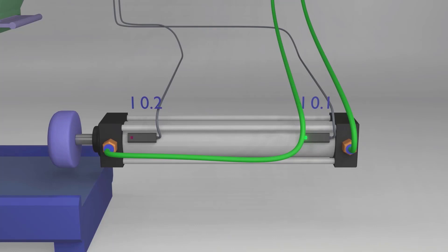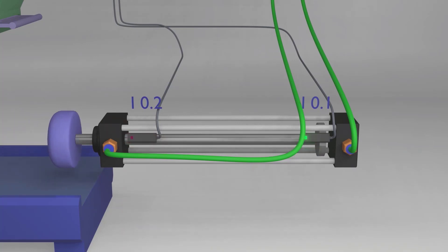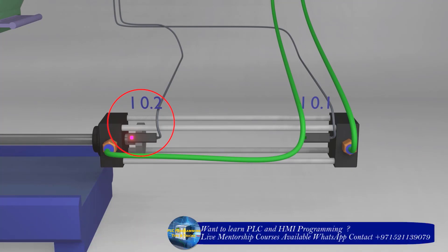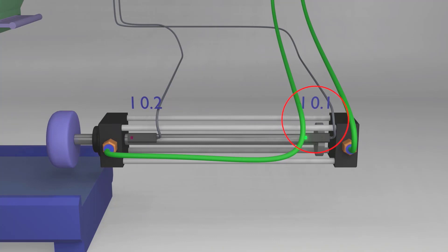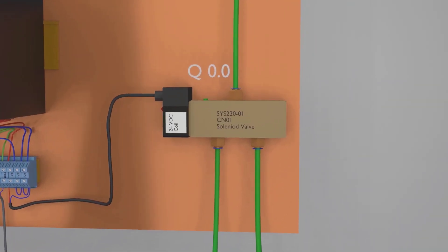Reed switches are used to detect the position of the piston. Whenever the piston comes in front of a reed switch, it detects the piston and sends a signal to the PLC. When the piston reaches the front end, the front end reed switch sends a signal to I0.2. When the piston comes back, the back end reed switch sends a signal to I0.1.